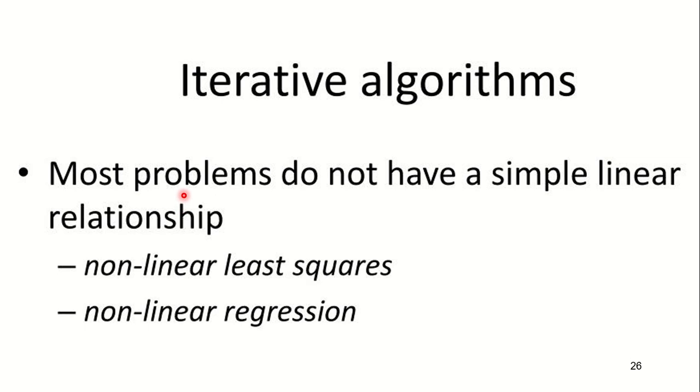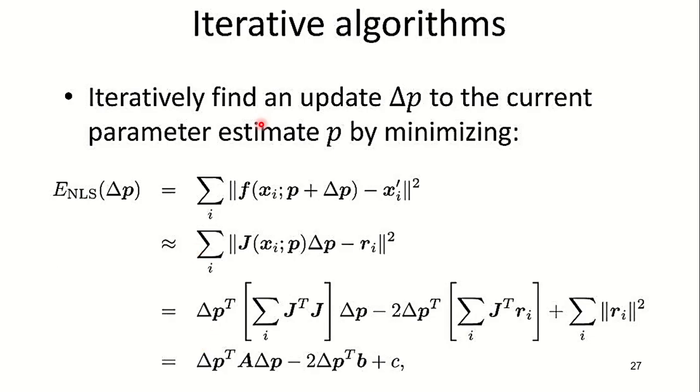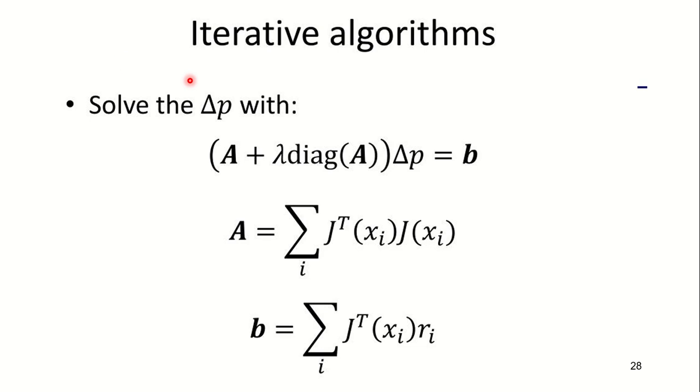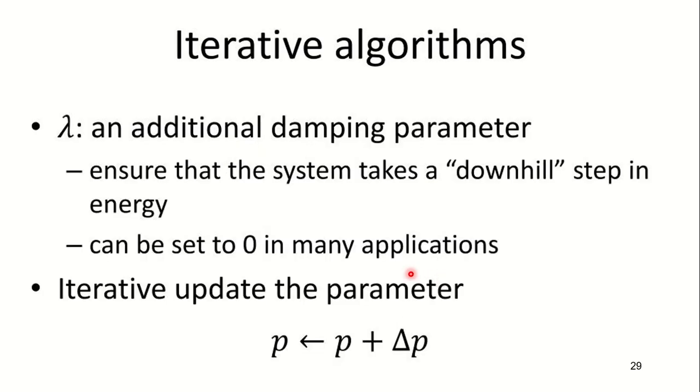Iterative algorithms. We don't always have a linear relationship. So when we don't have a linear relationship, we go for non-linear least squares and non-linear regression. In iterative algorithms, iteratively we find an update Δp to the current parameter estimate p by minimizing the value of E_NLS. This is the equation for E_NLS. Solve for Δp with the equation (A + λ·diag(A))Δp = b, where A and B are given below. Your λ is an additional damping parameter which ensures that the system takes a downhill step in energy and it can be set to zero in many applications. Iteratively update the parameter by replacing p with p + Δp.